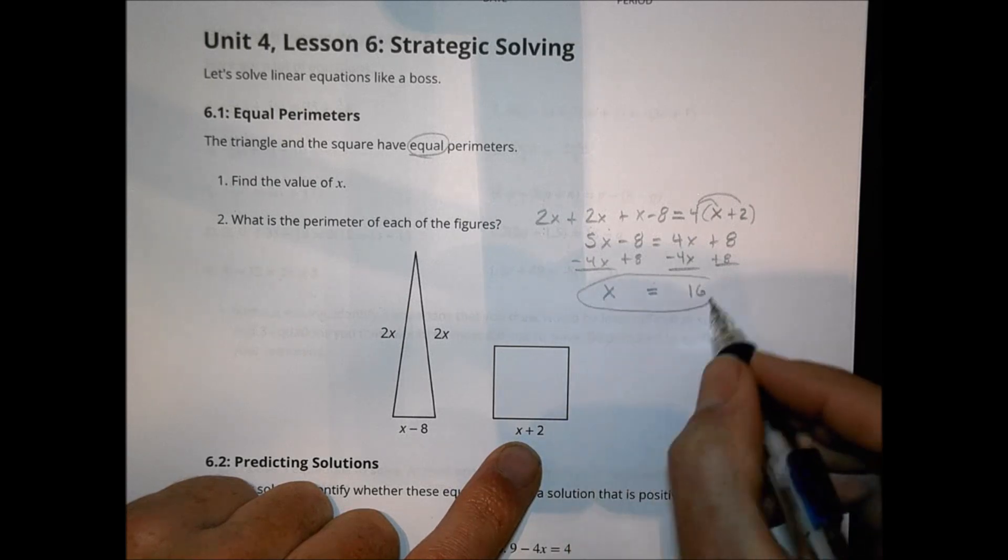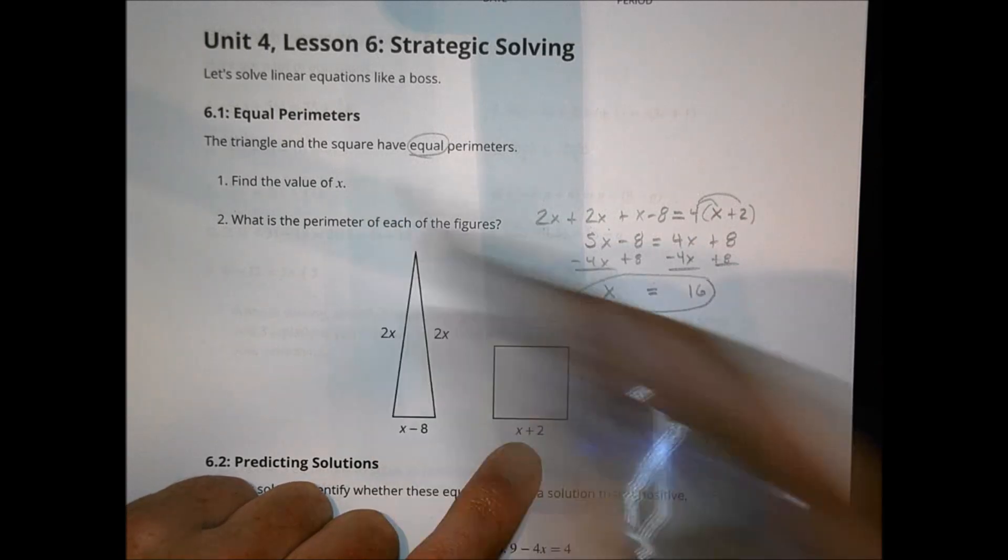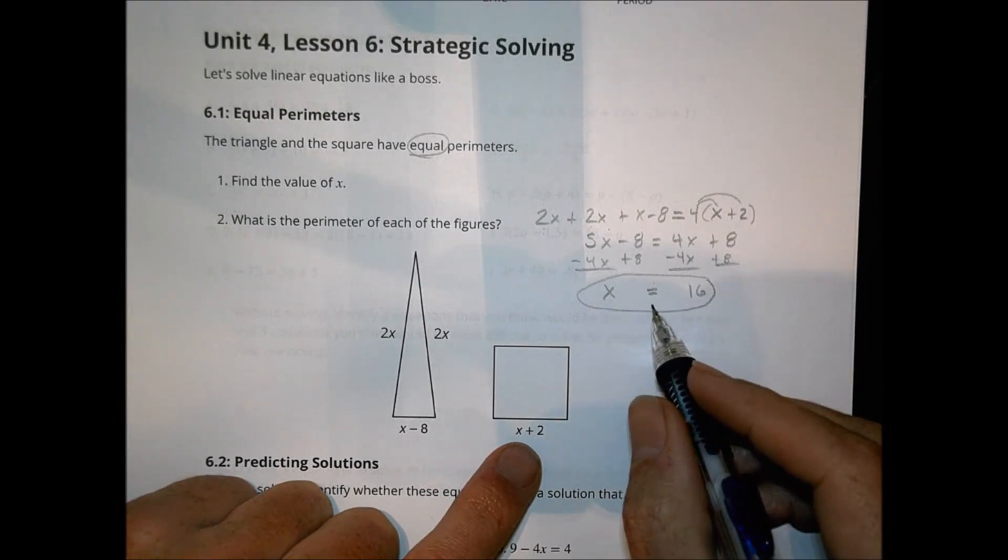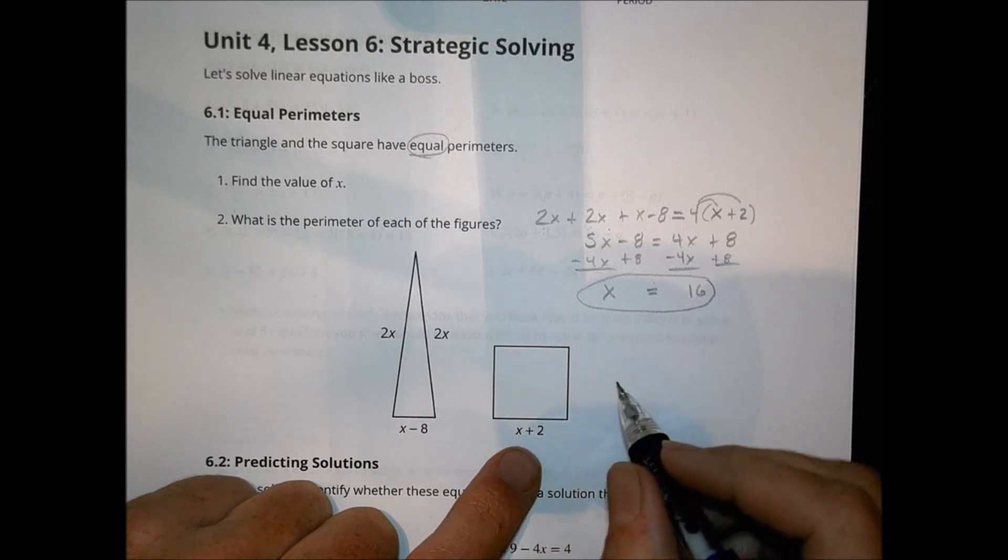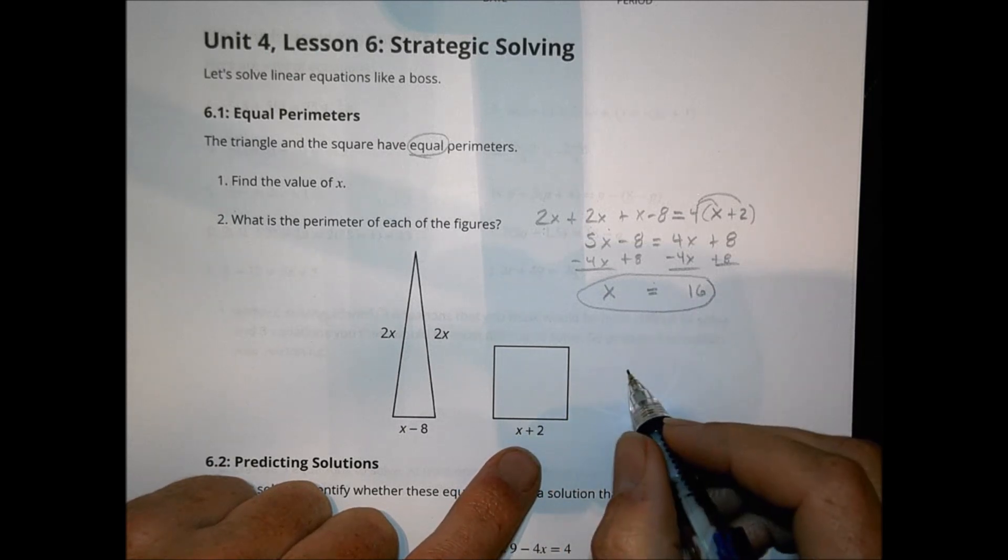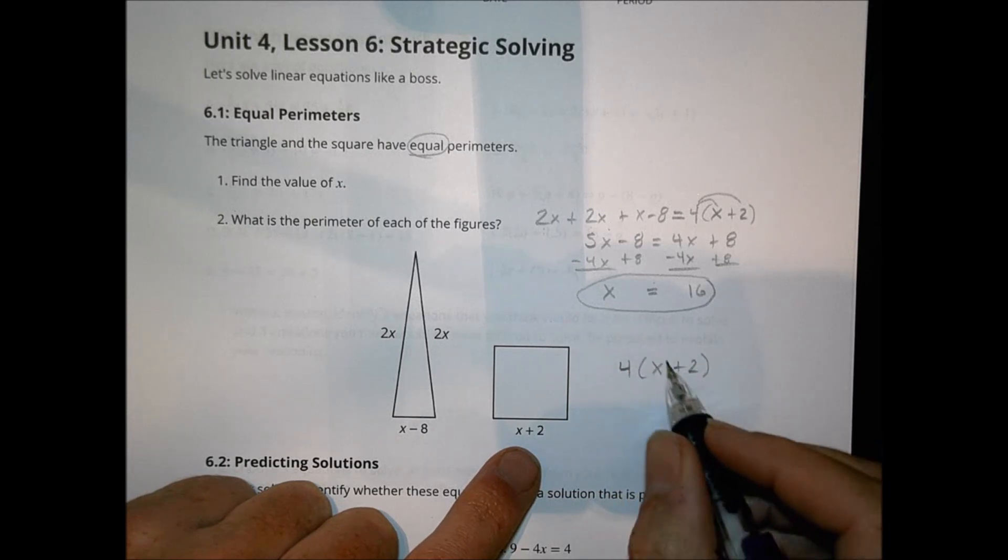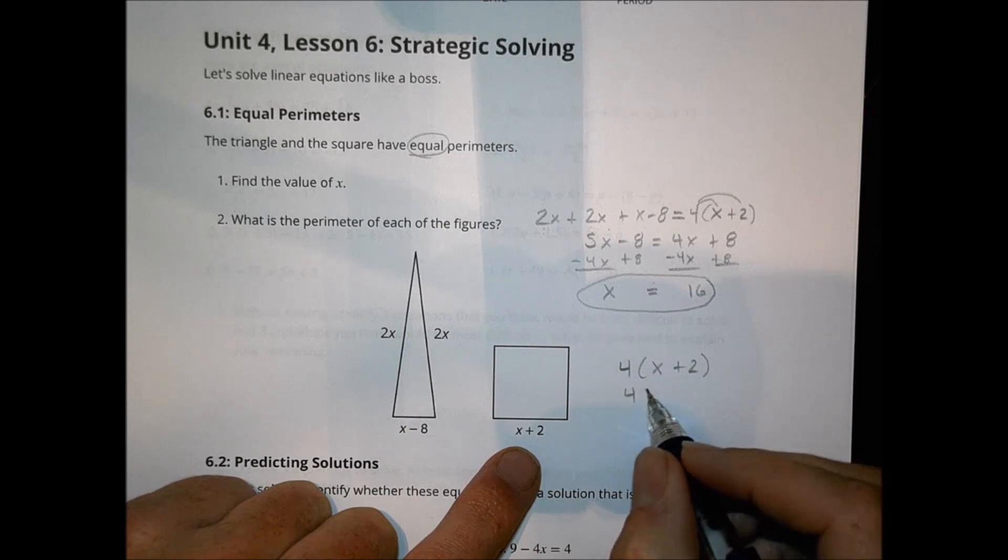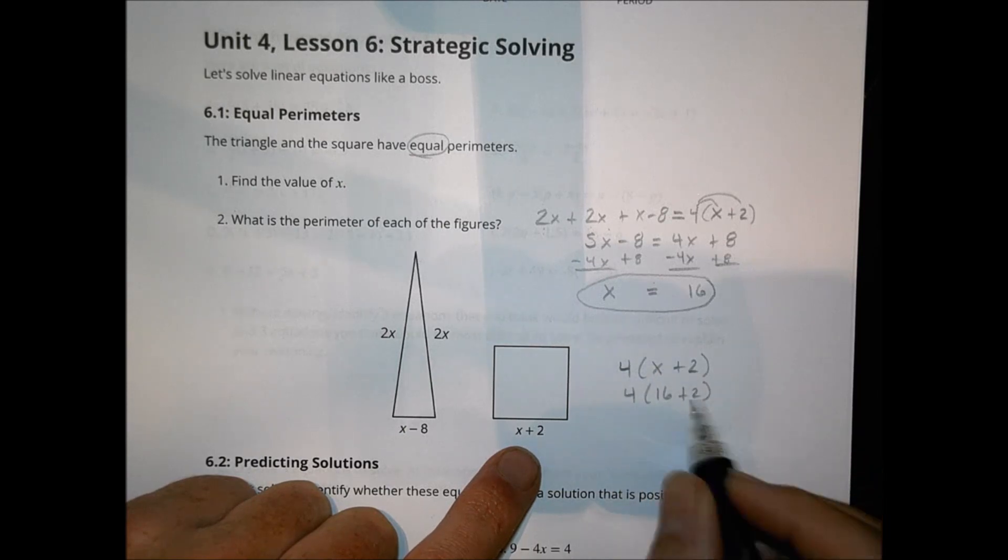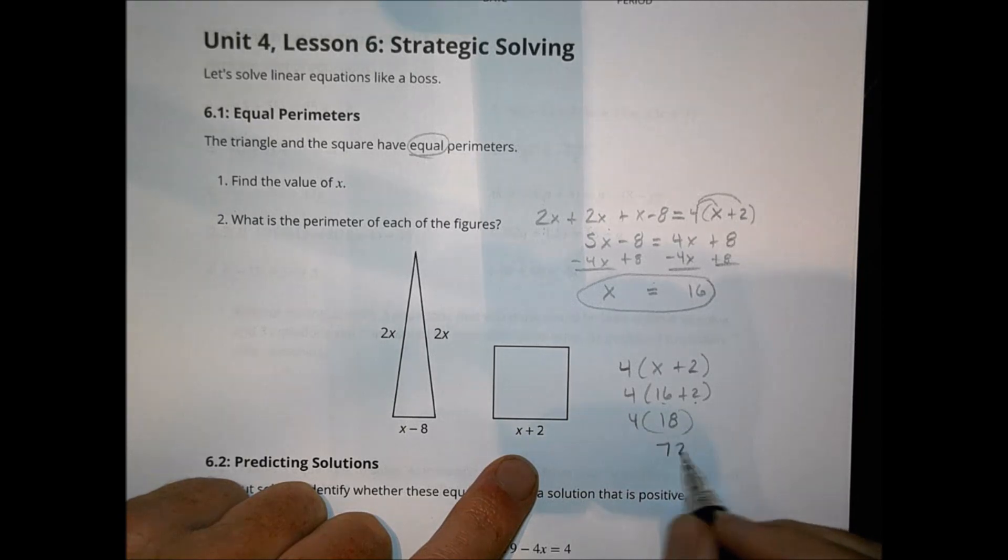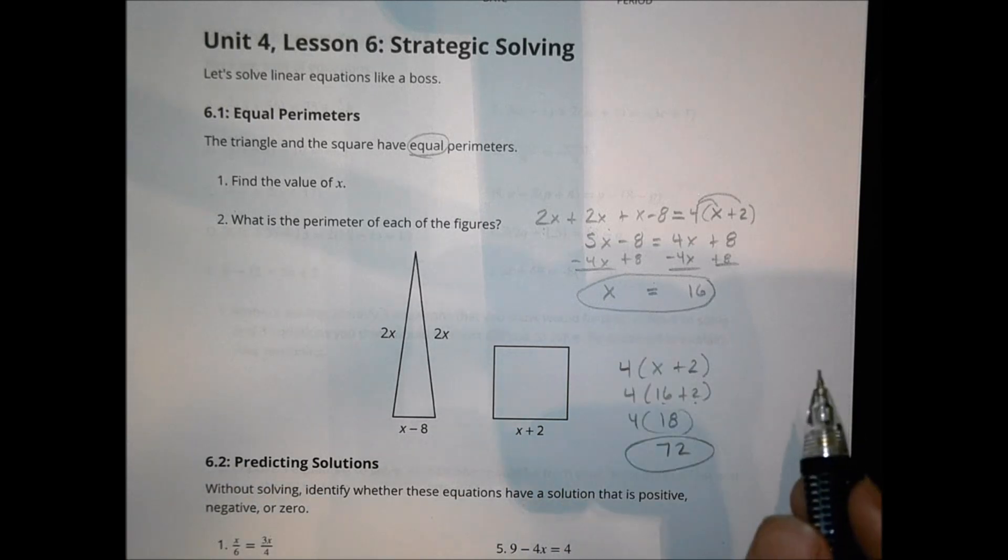So our value of x is going to be equal to 16, which solves the first question. But then to find the perimeter of each figure, I need to take that x value and put it back into one of my expressions. So for the square, for example, it was 4 times x plus 2. And so if x was equal to 16, we would replace the x with 16. So 16 plus 2 is 18, we're going to multiply that by 4, and 4 times 18 is going to be 72. So the perimeter of each shape would be 72, and x value is going to be 16.